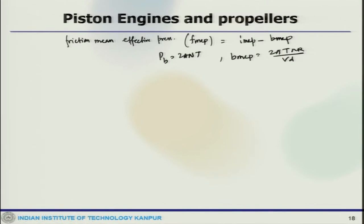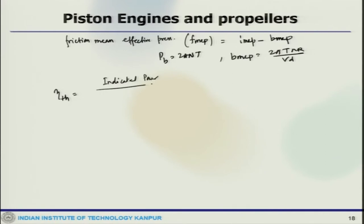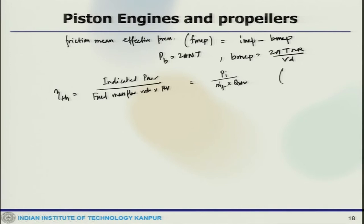With that, we can also define the thermal efficiency of the Otto cycle as fuel conversion efficiency. We write eta_TH equals indicated power divided by fuel mass flow rate times heating value, which is P_I by M_dot_F times Q_HV. This is the fuel conversion efficiency.